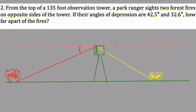Here on the right, you can see it's clearly a larger angle, and that means you're looking further down at a closer fire. So here, we're going to associate this with the 42.5 degree angle measure, and on the left, we're going to associate that with the 32.6 degree measure. And we want to know how far apart these two are. Well, we also know the height of the tower. It's going to be critical here.